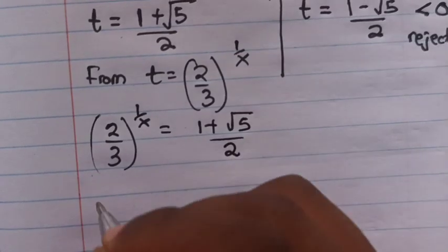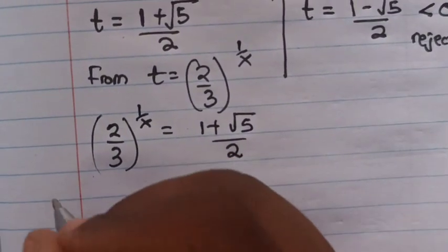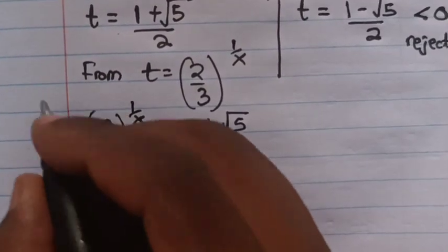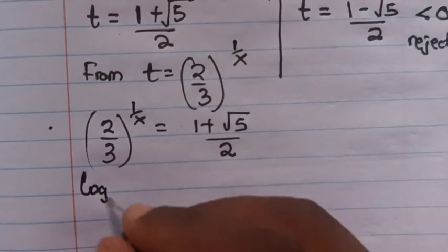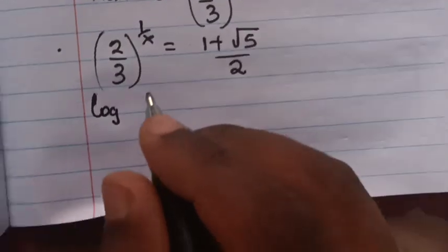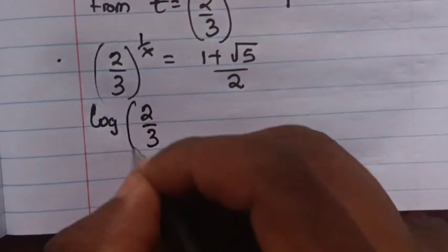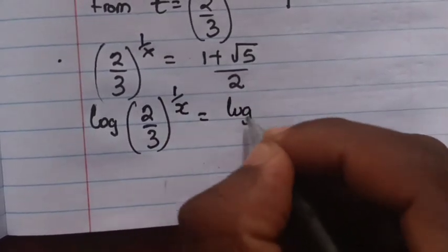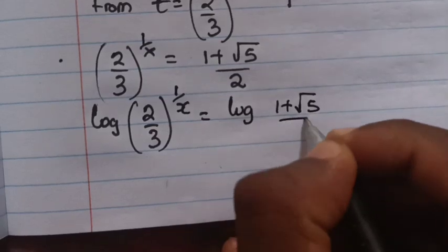Now, as the final step, we apply log to both sides: log of (2/3)^(1/x) equals log of (1 plus square root of 5) over 2.